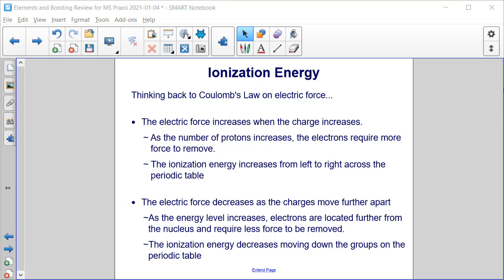From left to right across the periodic table, the number of protons in the nucleus are increasing. So from left to right, the ionization energy is increasing. As the charges move further apart, as the positive nucleus and the negative electrons move farther apart, that electric force decreases.